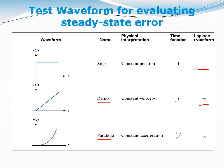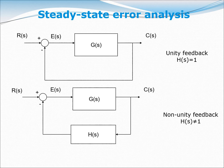The last one is a parabolic waveform or parabolic input. In the time domain you get 0.5t squared, and the Laplace transform gives one over s cubed. All three waveforms will be used to evaluate the steady state error.